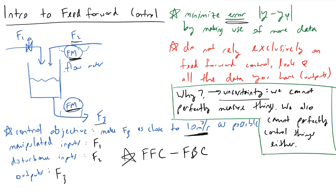Feedback controllers are robust in that they will eventually get you closer to your set point value, though never exactly there. But you can make use of more information, so that if you know there's a surge or drought coming in your F2 stream, you can proactively manipulate stream F1 to minimize the error for your set point. That is why we care about feedforward control. We're going to use feedforward in conjunction with feedback in all of our processes, making sure we use every piece of relevant information when designing controllers.